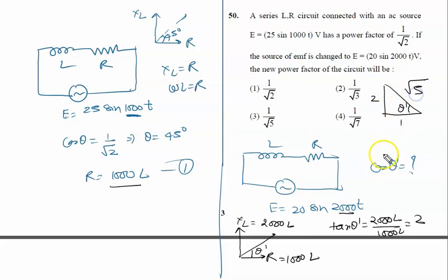What is the value of cos θ'? It is visible from this diagram: cos θ' = 1/√5. The right answer to this problem is option 3, that is 1/√5.